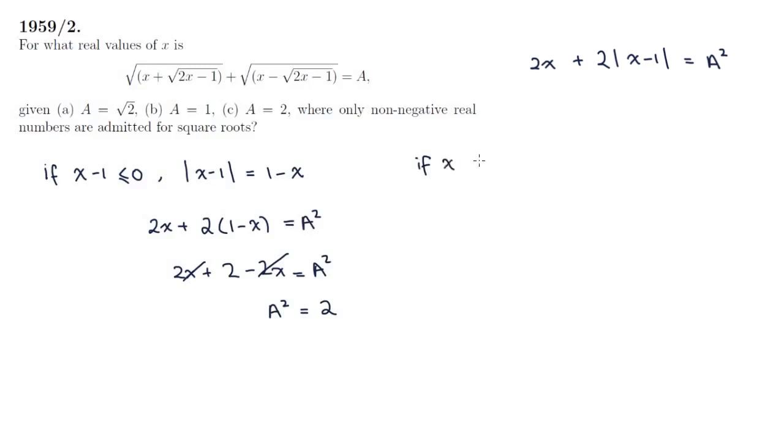And let's now assume that the expression inside is positive, so absolute value x minus 1 is just x minus 1. 2x plus 2x minus 1 is a squared. And 4x minus 2 is a squared. So those are the two branches of the absolute value, and let's not forget the original condition that x must be greater than or equal to a half.